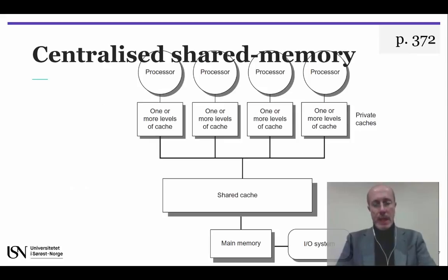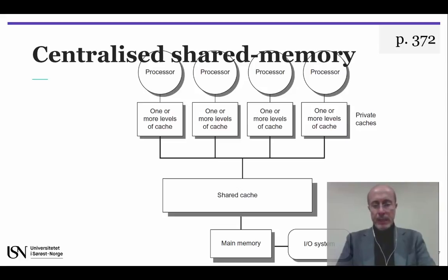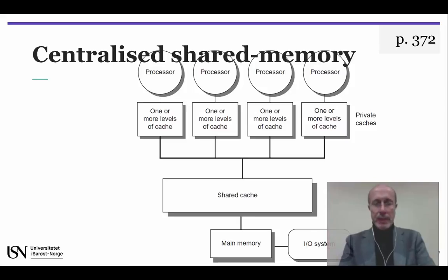This slide shows the structure of a centralized shared memory multiprocessor based on a multi-core chip, with one level of shared cache on the multi-core and one or more levels of private per-core caches. In the case of a multi-chip design, an interconnection network links the processors and the memory, but in the case of a single-chip multi-core, the interconnection network is simply the memory bus.